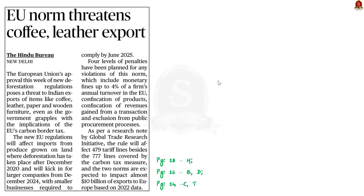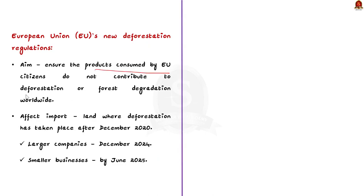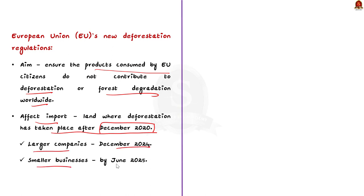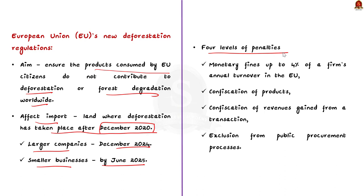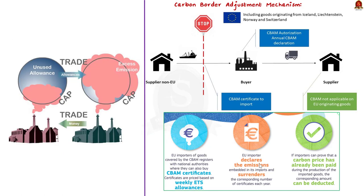A front-page article discusses new deforestation regulations approved by the European Union. The new regulation ensures that products consumed by EU citizens do not contribute to deforestation or forest degradation worldwide. It affects imports from produce grown on land where deforestation occurred after December 2020, kicking in for larger companies from December 2024 and smaller businesses by June 2025. Penalties include monetary fines up to 4% of annual EU turnover, confiscation of products and revenues, and exclusion from public procurement. This poses a threat to Indian exports of coffee, leather, paper and wooden furniture.